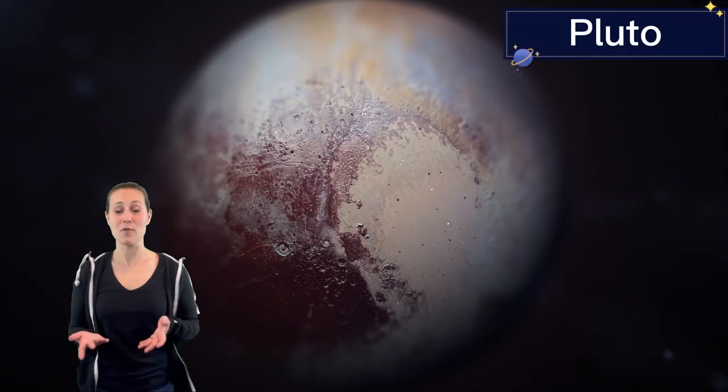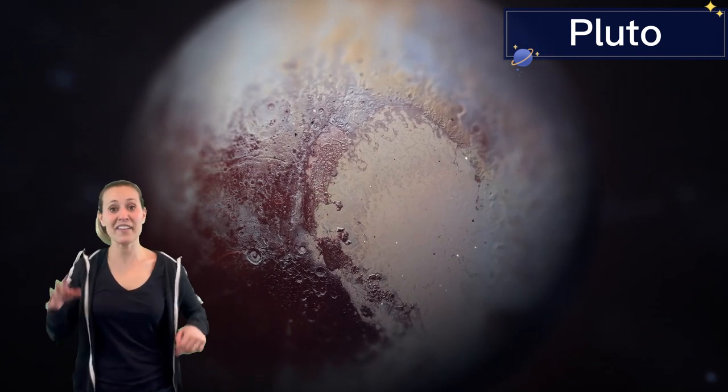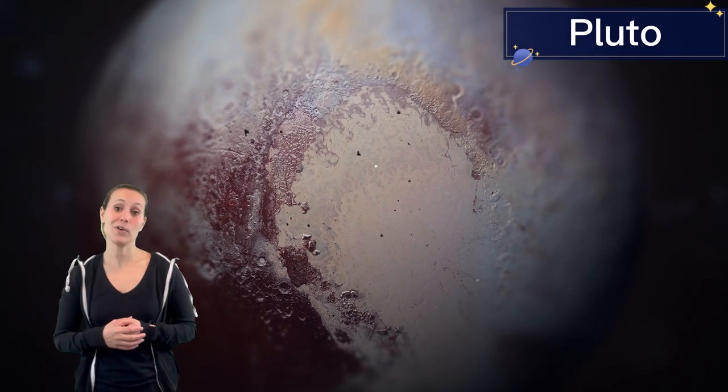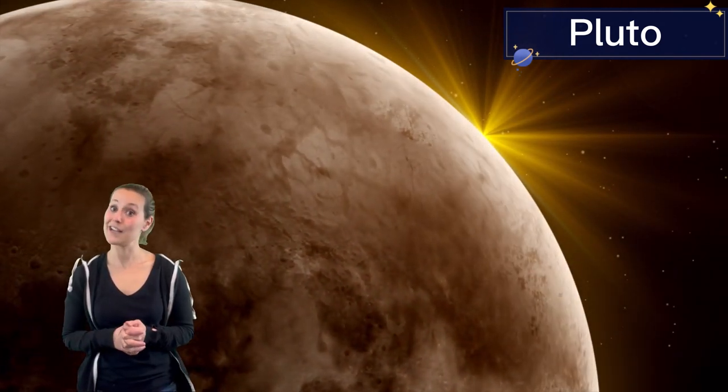And then we have Pluto. Poor Pluto. Pluto used to be called a planet, but then they said, nah, Pluto, you're just too tiny. And they started calling him a dwarf planet, which is just like a small planet. It takes Pluto 248 Earth years to orbit the Sun. Wow, Pluto, taking your time, huh?